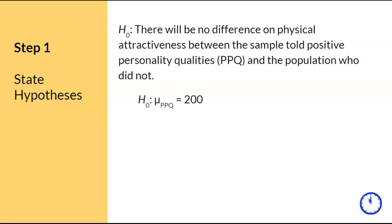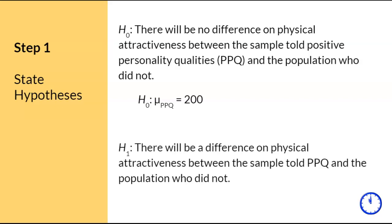In notation, if the sample is not different from the population, then the sample should have the same mean as the population, which is mu equals 200. The research hypothesis will reflect that there is a difference. In notation, if the sample is different from the population, then the sample should not equal the same mean as the population.